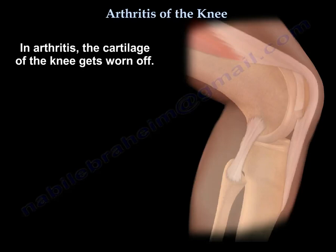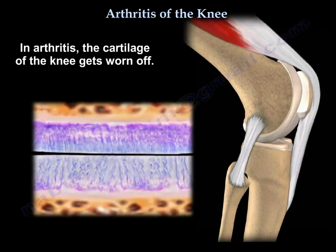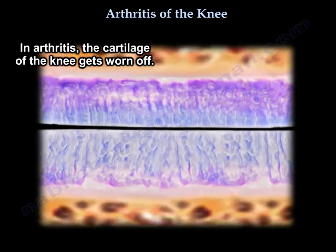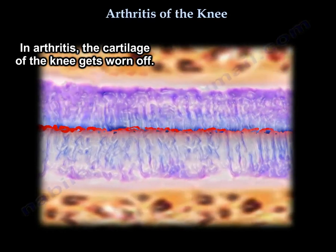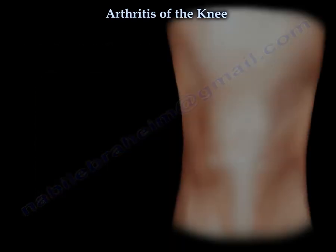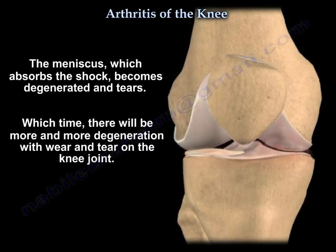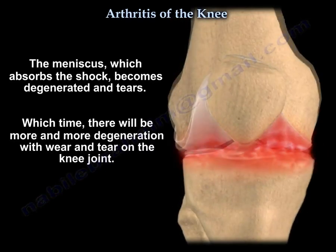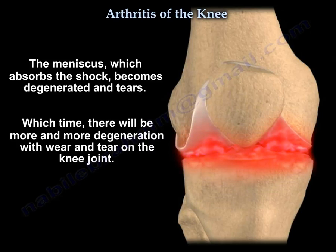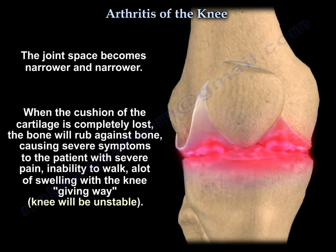In arthritis, the cartilage of the knee gets worn off, and the meniscus, which absorbs the shock, degenerates and tears. With time, there will be more and more degeneration and wear and tear. The joint space becomes narrower and narrower, and when the cushion of the cartilage is completely lost, the bone will rub against bone, and that will cause severe symptoms to the patient.